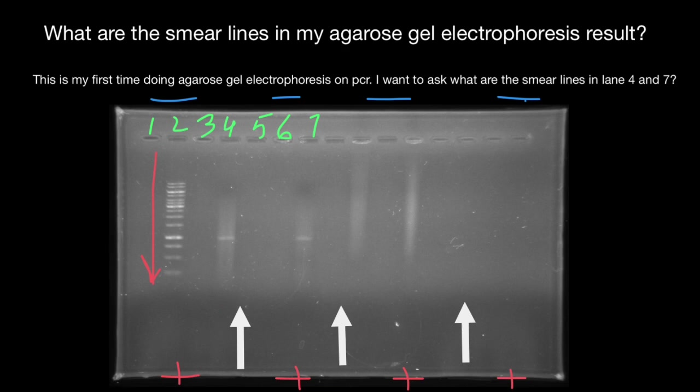Sometimes when your sample is not properly digested, you may experience a smear line. Contaminants or hairpinning as a result of homology can also give a smear. It is advisable to rerun your sample and compare the outcome. It is advisable to run a negative control — in other words, no DNA template is added — and if you still get amplicons or smears, this may indicate cross-contamination.